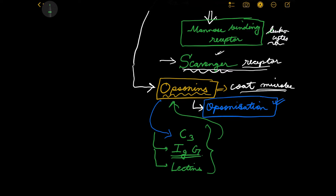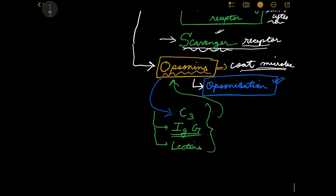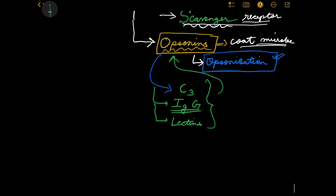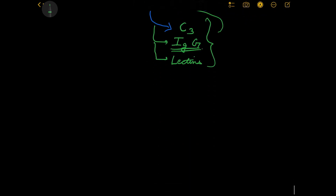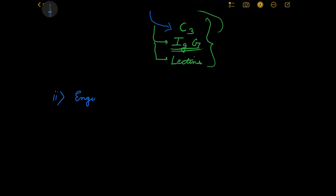Now the second step of phagocytosis: the actual engulfment of the microbes. The actual phagocytosis is starting - the WBC has cornered the offending agent and is set to kill it. For killing it, it engulfs that microbe - that bacteria, virus, or parasite - by pseudopod formation. The pseudopods close around the microbe, engulfing it in a vacuole known as the phagocytic vacuole, or phagosome.